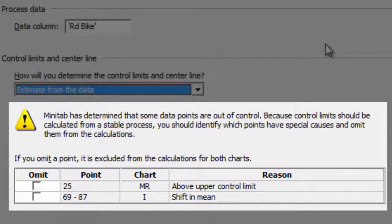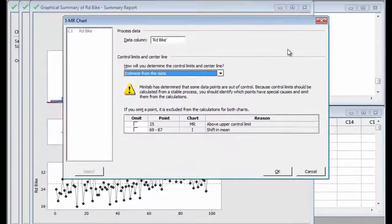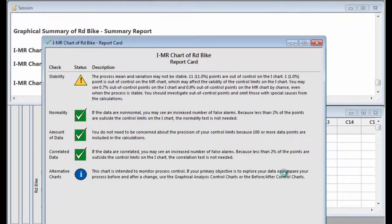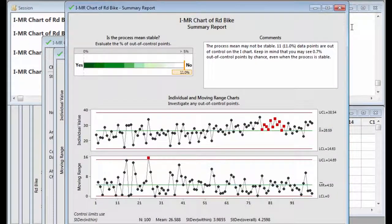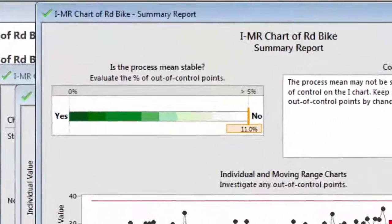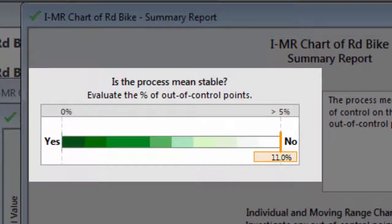But Joel can't identify any special causes to justify removing them. The Assistant produces a report card, a diagnostic report, and a summary report. The summary report indicates that with the process Joel is using now, the process mean is not stable, and he cannot accurately predict whether he's going to make it to work on time or not.